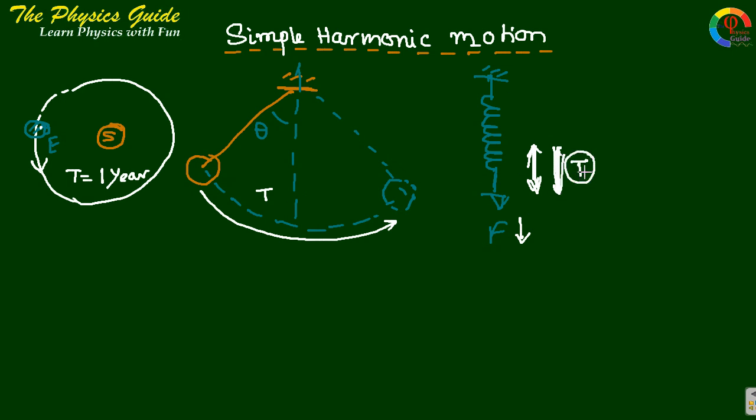For each time T it repeats its path. So these three have one thing in common: the time period is constant. This type of motion is called periodic motion. All these three are in periodic motion.